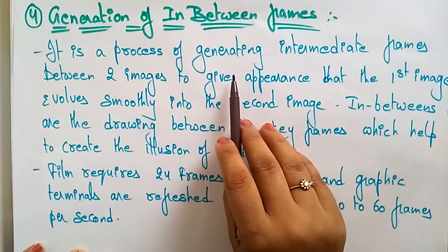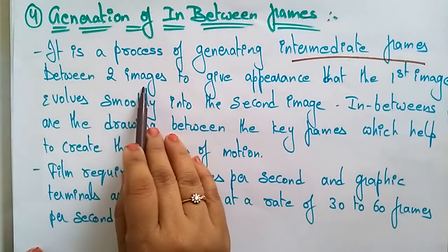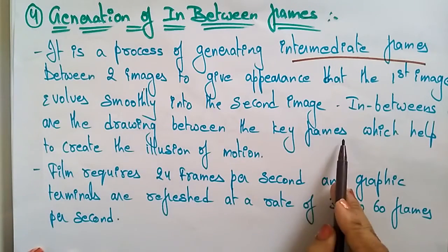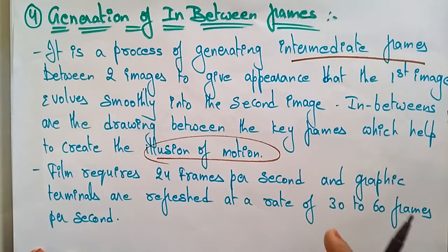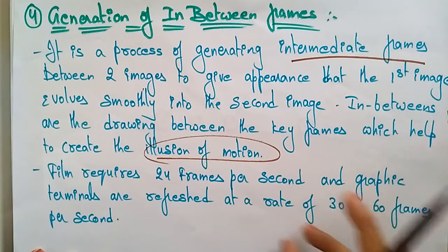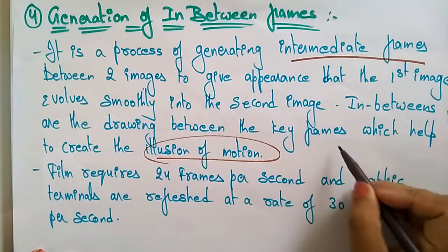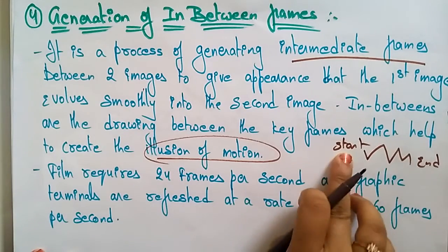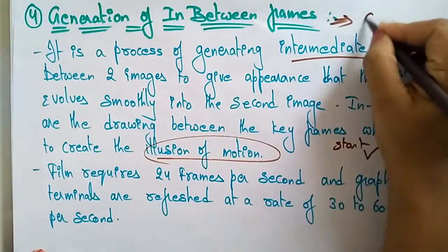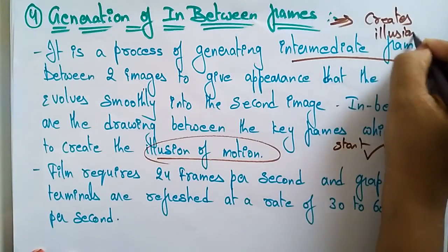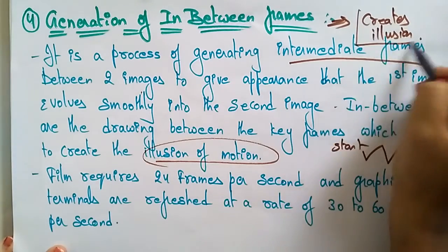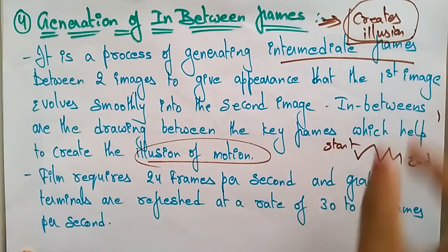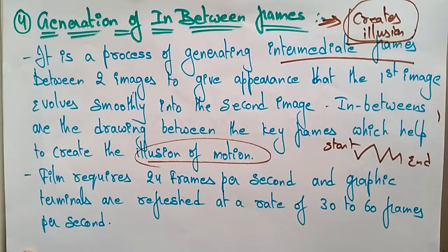Generation of in-between frames is the process of generating intermediate frames between two images to give the appearance that the first image evolves smoothly into the second image. In-between frames are the drawings between the keyframes that help create the illusion of motion. So the keyframes are the start and end that you see, and the in-between frames are what the computer generates to create the animation — the illusion of motion.